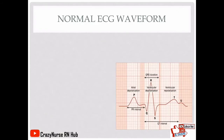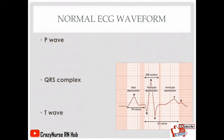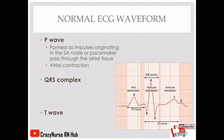Now let's have the normal ECG waveform. In your ECG tracing or calibrated paper, you will see the P wave, the QRS complex, and the T wave. The P wave is formed as impulses originating in the SA node or pacemaker pass through the atrial tissue, and it implies atrial contraction. So once you see a P wave, it gives you an idea that the two atria are contracting.